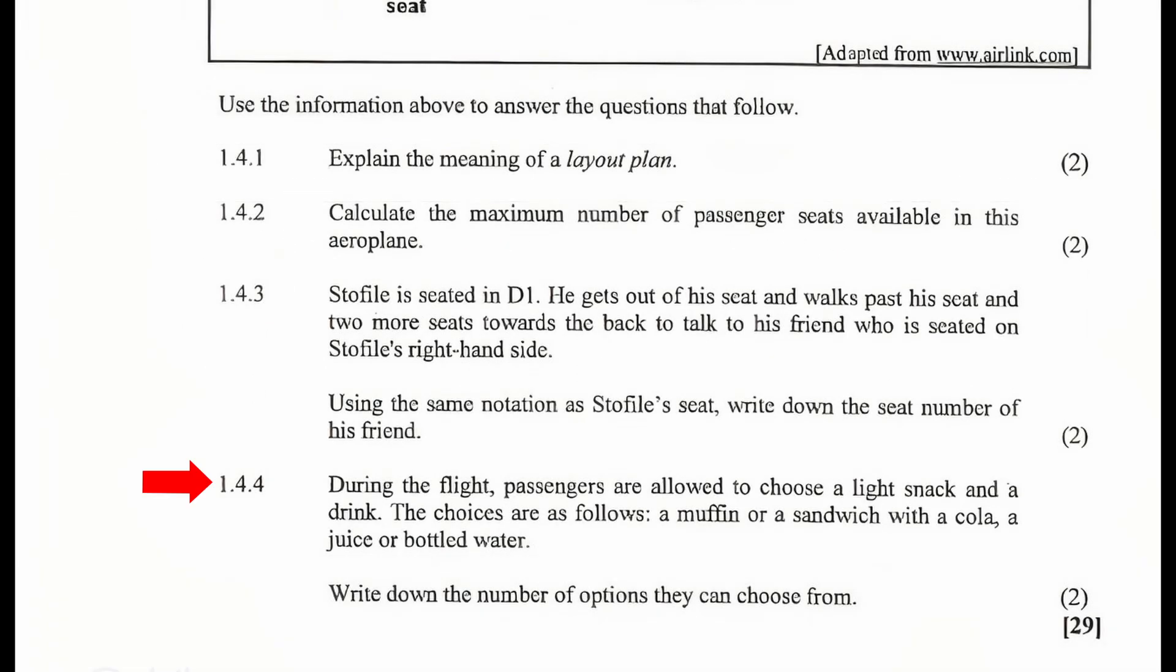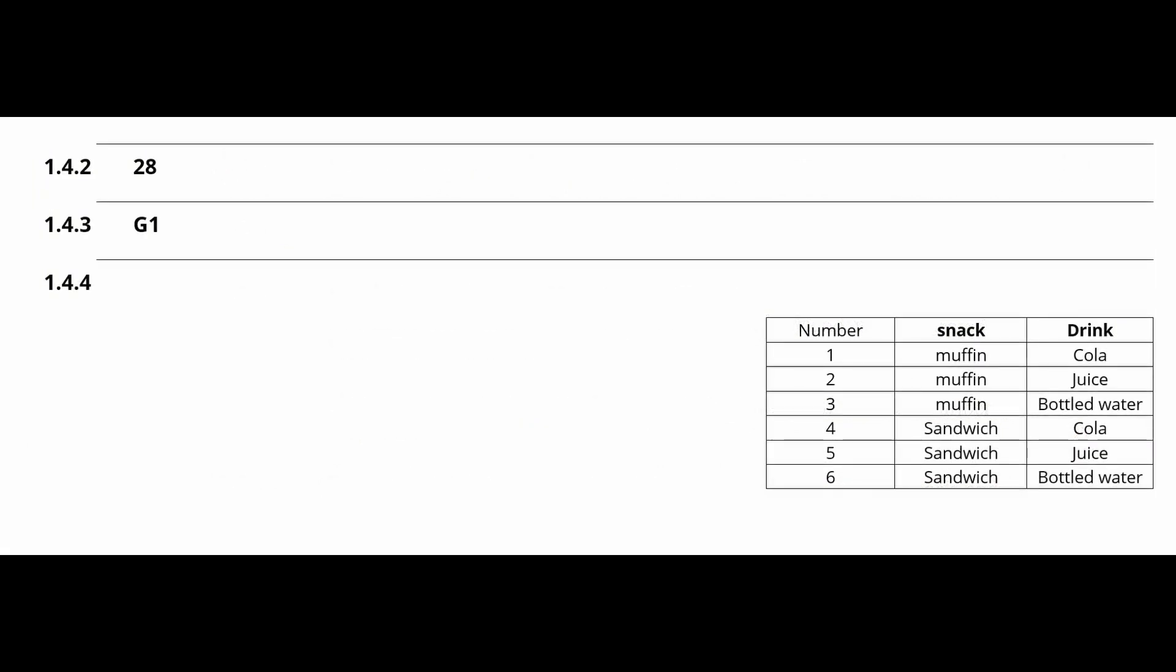1.4.4: During the flight passengers are allowed to choose a light snack and a drink. The choices are as follows: a muffin or a sandwich with a cola, a juice or a bottled water. Write down the number of options they can choose from. The combinations of snack and drink choices are listed in the table below. From this table, the number of options they can choose from is 6.